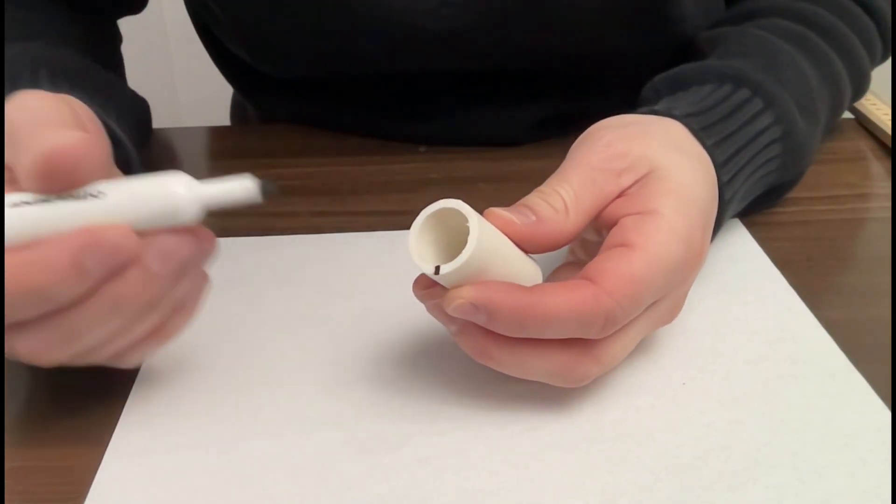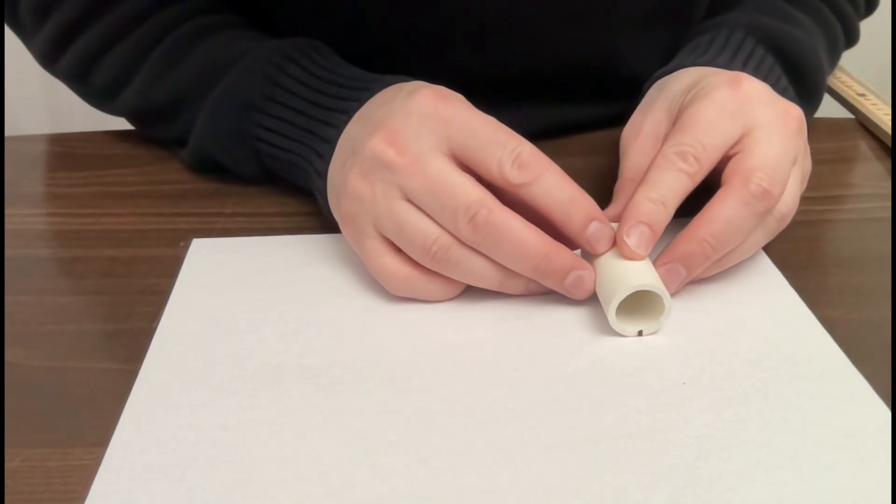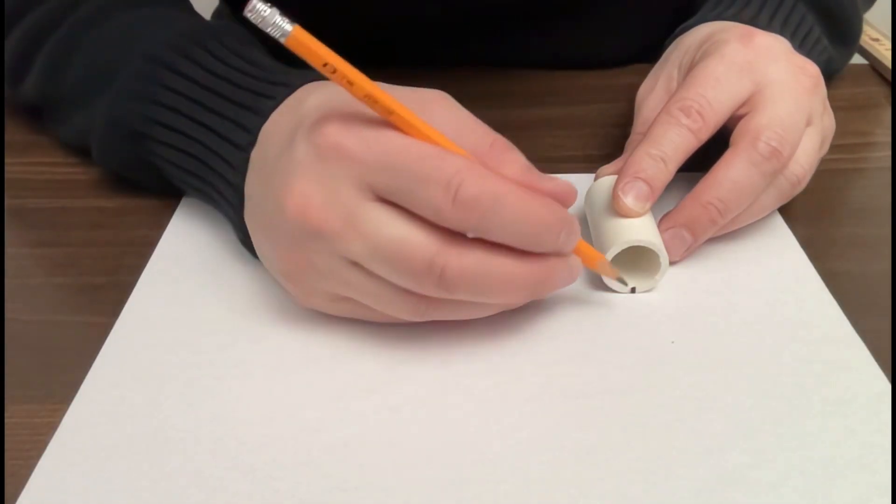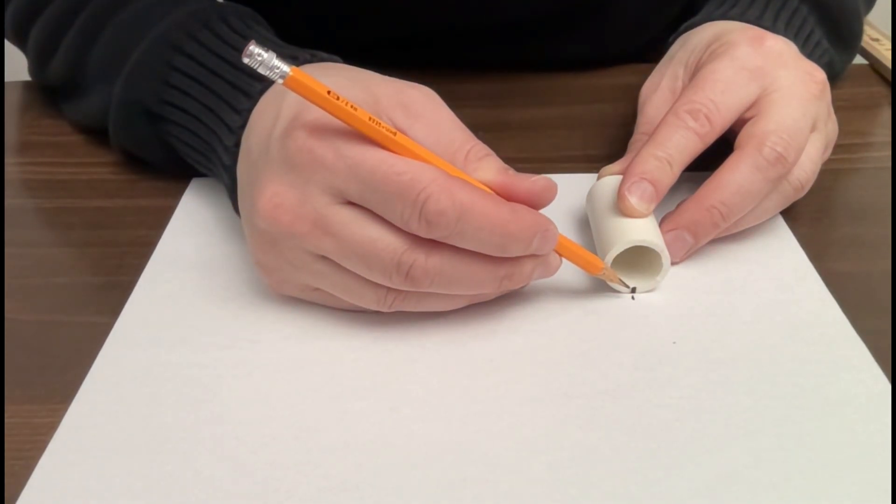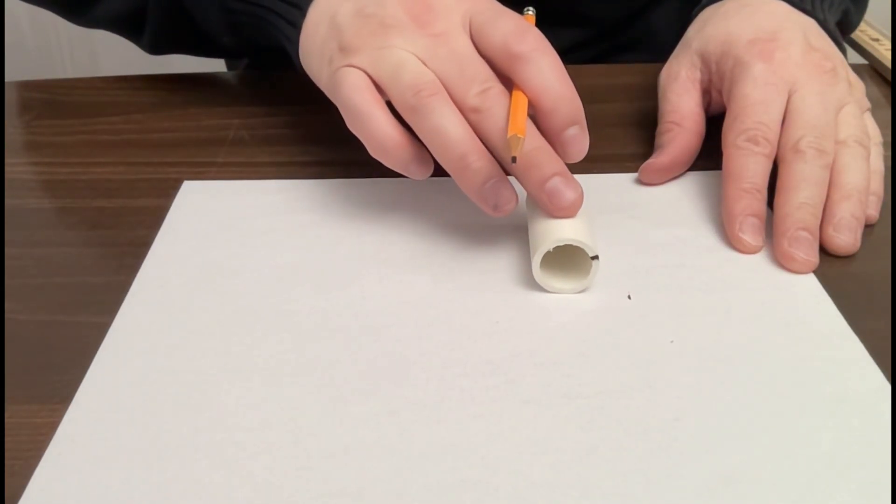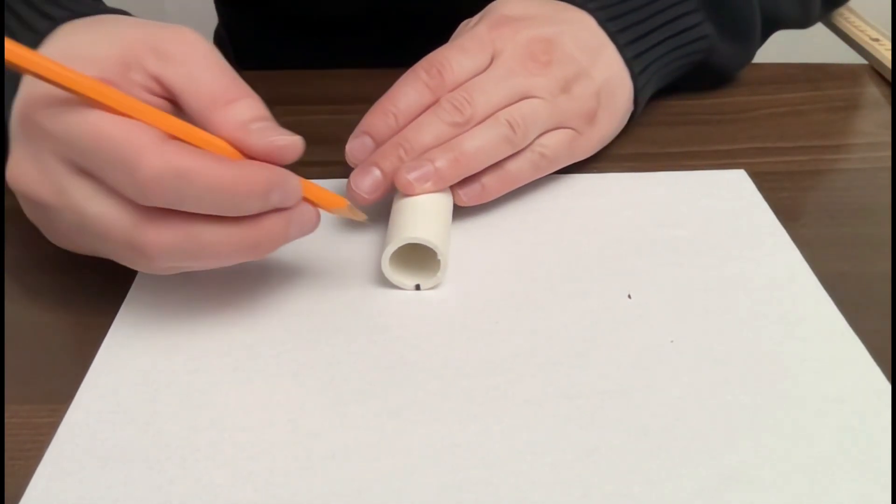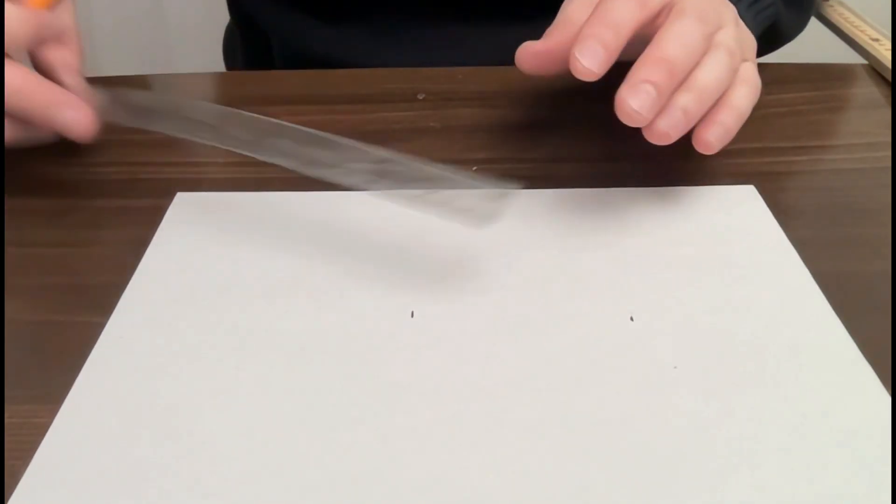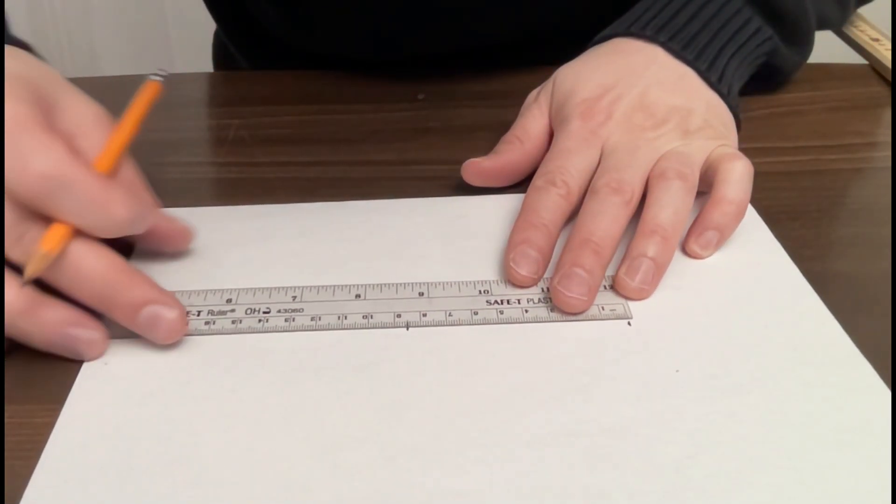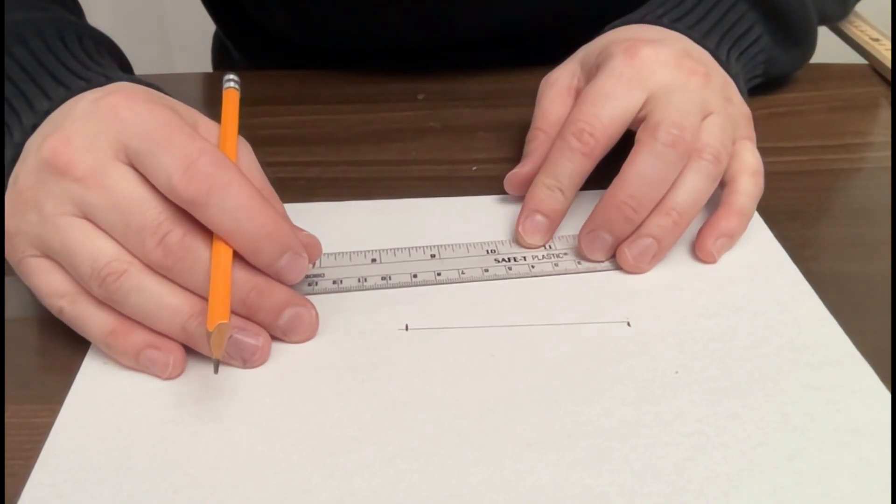When we're finding the circumference of the cylinders, we want to put a dark mark on an edge of the cylinder. Then set it down on a piece of paper. You'll want to make a line on your paper to indicate where the mark touches the paper. Then roll your cylinder until that mark comes back and touches the paper once again.